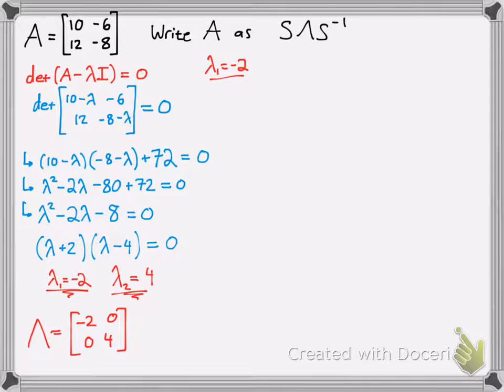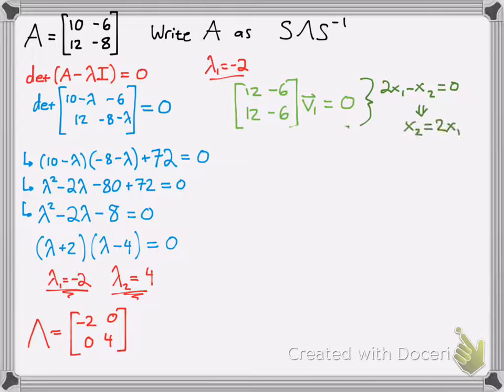Next, use your first eigenvalue and solve for your eigenvector. So what you do is when you have negative 2, you just plug it into that blue part over there on the left. So 10 minus negative 2 is 12, negative 6 is 12, negative 8 minus negative 2 is negative 6, times V1 equals 0. You can do this the algebra way or you can actually row reduce. So I'm just going to do it the algebra way, and you should get x2 is equal to 2x1. So you can pick any numbers you want for your special solution here. So I just picked x1 to be 1, and therefore x2 would be 2.